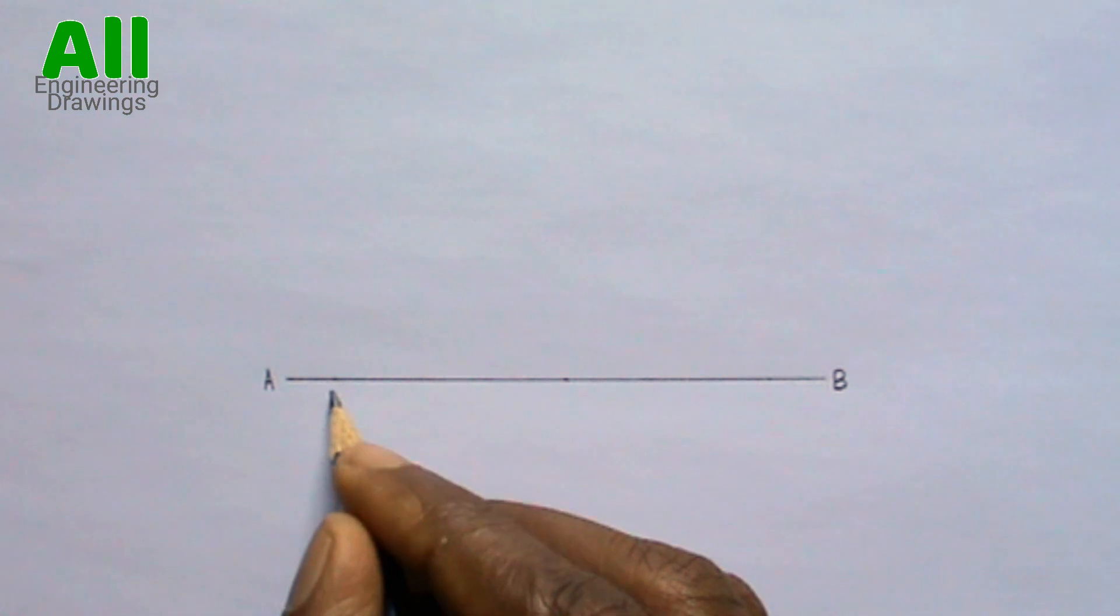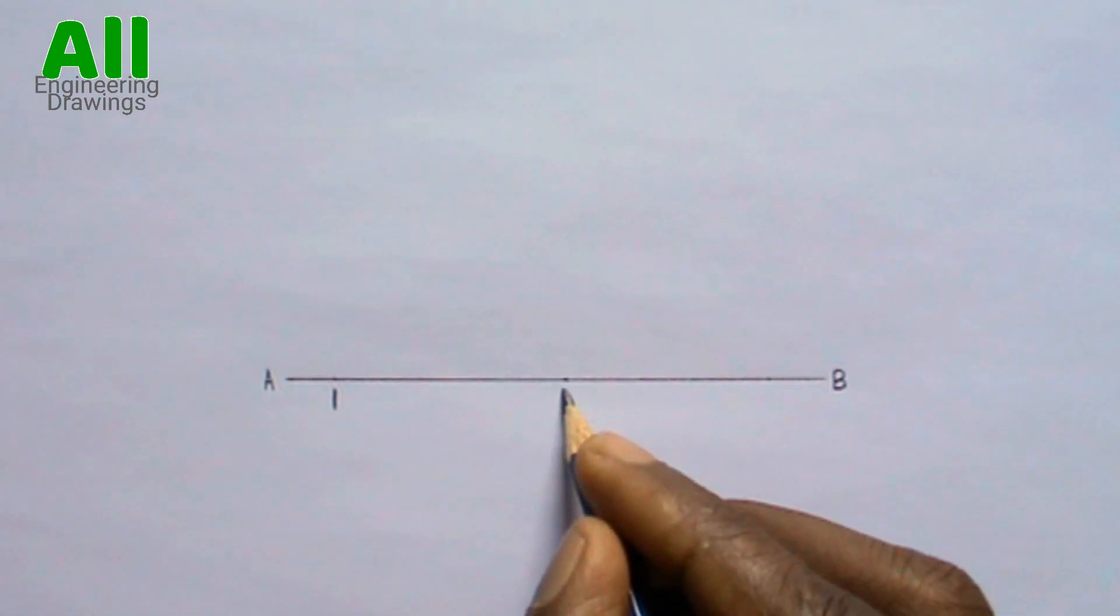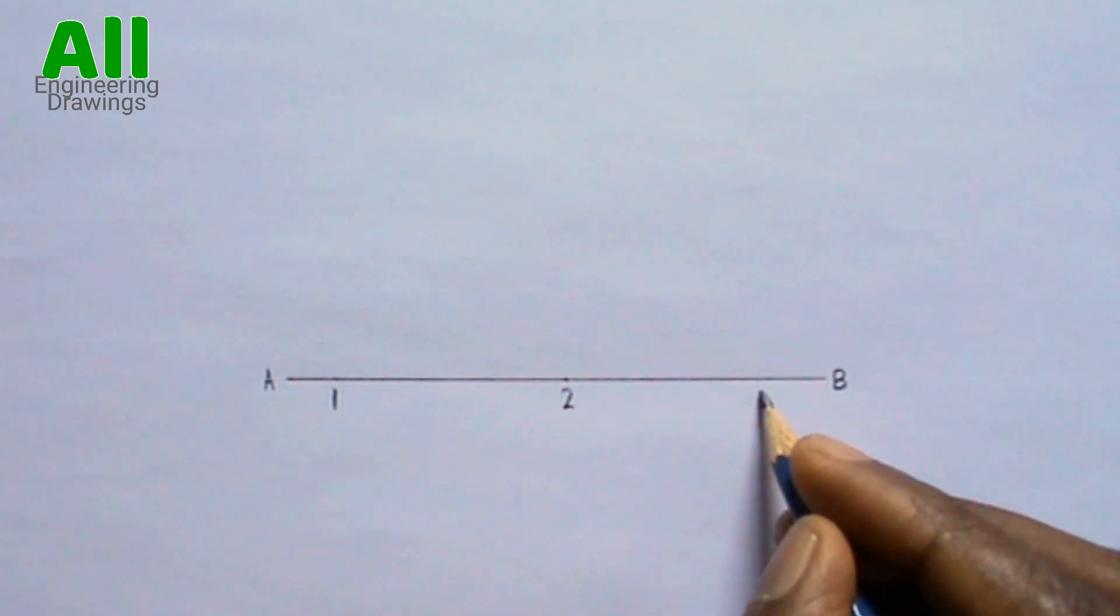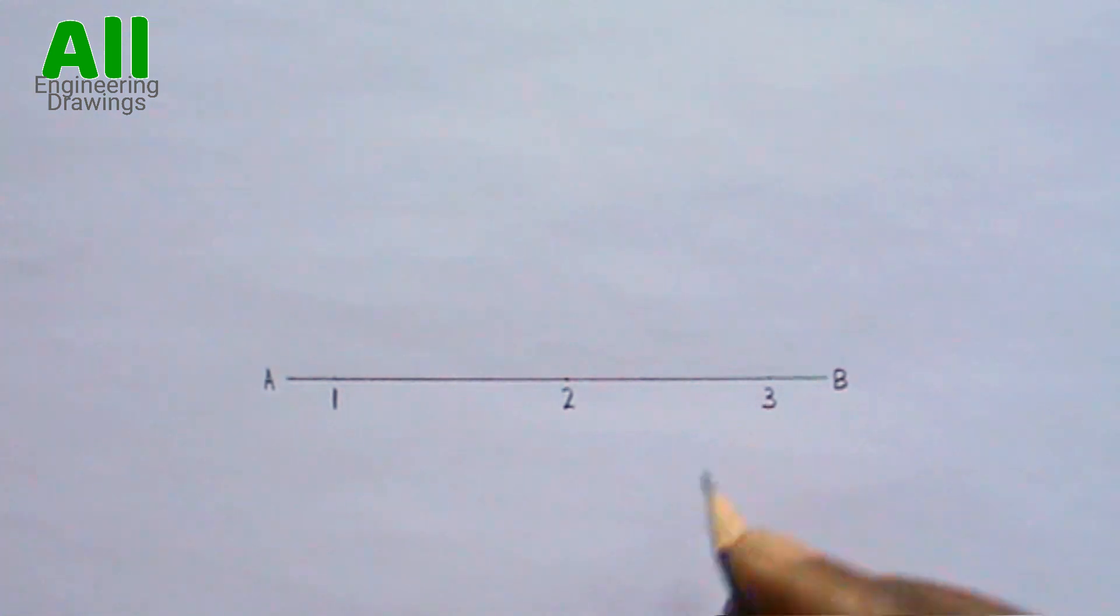Number the points you marked. Points one and point three should be close to the ends of the line.